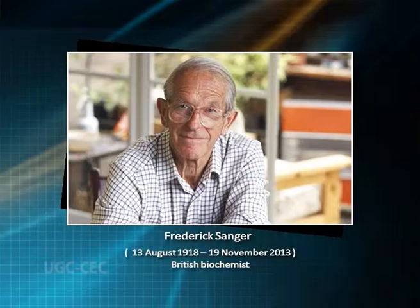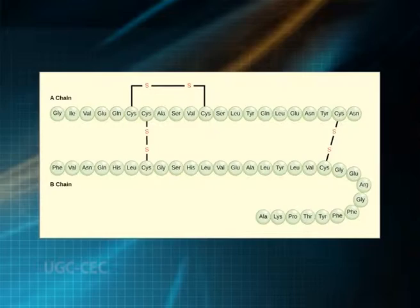In 1955, Frederick Sanger proved that every protein has a unique sequence and the protein sequence of bovine insulin was reported by 1956. The construction of bioinformatics or biological databases was started after the discovery of the bovine insulin sequence. After a decade, the first nucleic acid sequence of yeast alanine tRNA with 77 bases was reported.